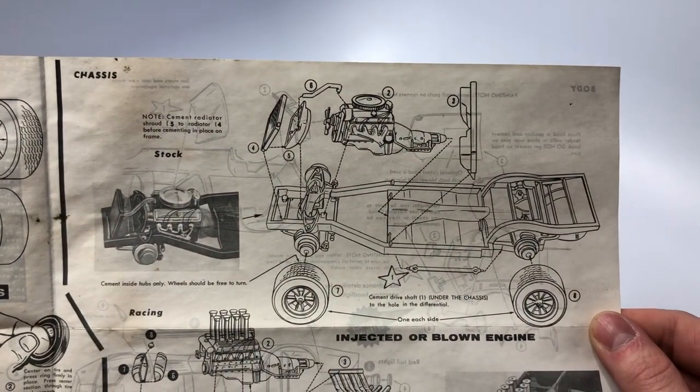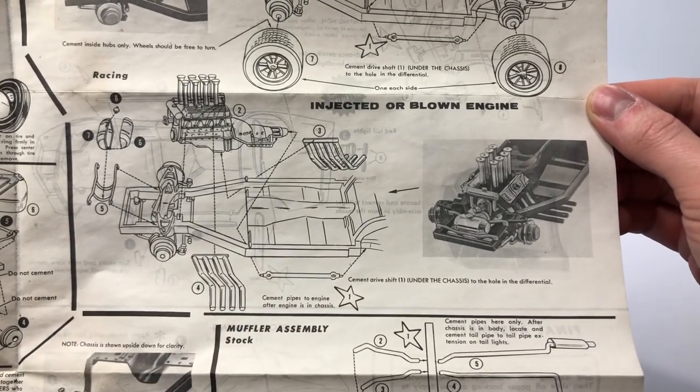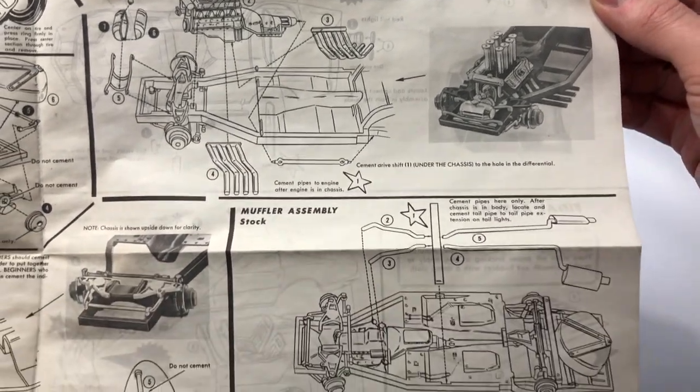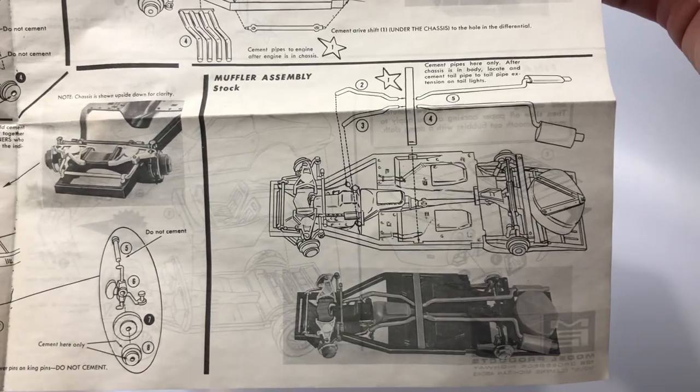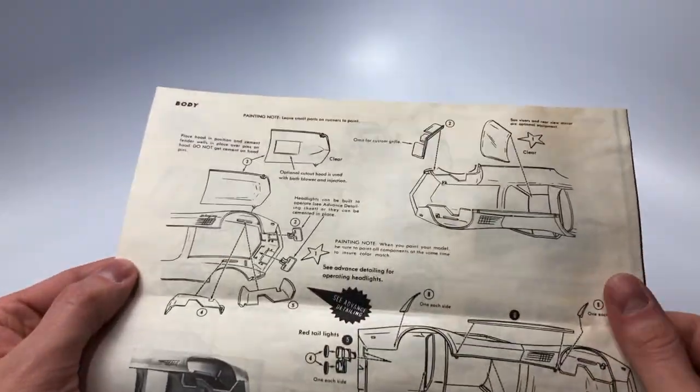The instructions continue on the chassis portion of the build and then moving to the blown or injected engine installation. The stock muffler assembly completes this section of the manual. Moving on to the back side we have the body and funnel assembly.